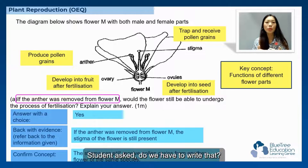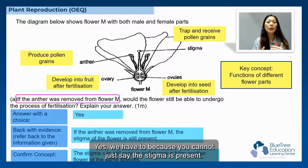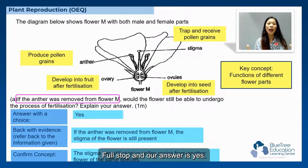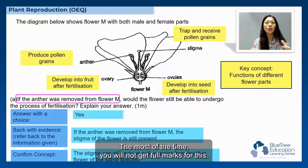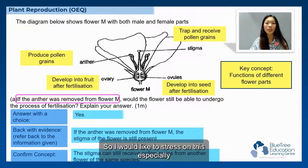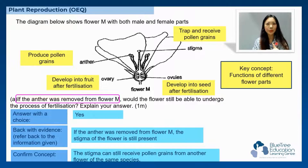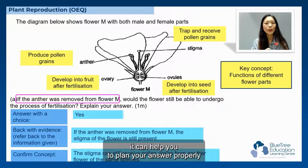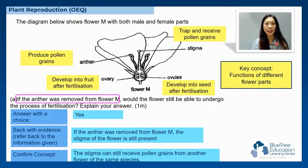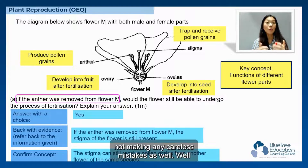Students ask: do we have to write that? Yes, we have to. You cannot just say 'the stigma is present' and stop there — most of the time you will not get full marks for that. When you use the ABC technique, it can help you to plan your answer properly and avoid making careless mistakes.